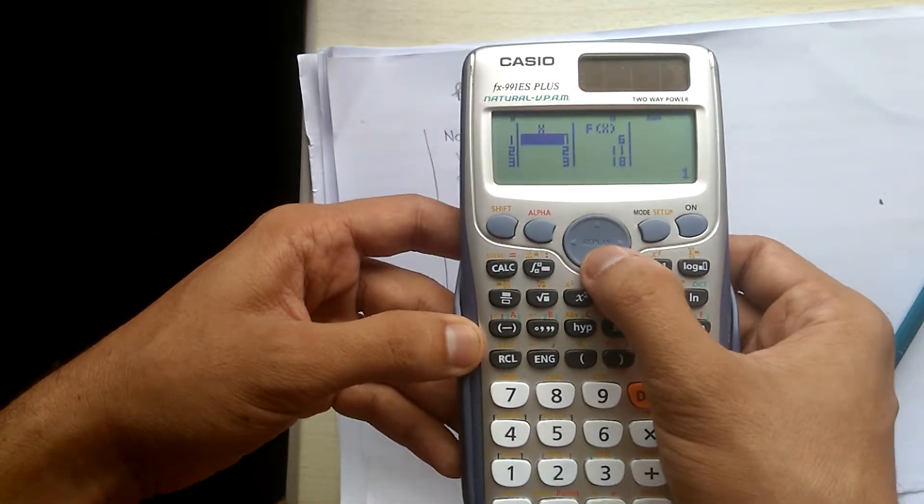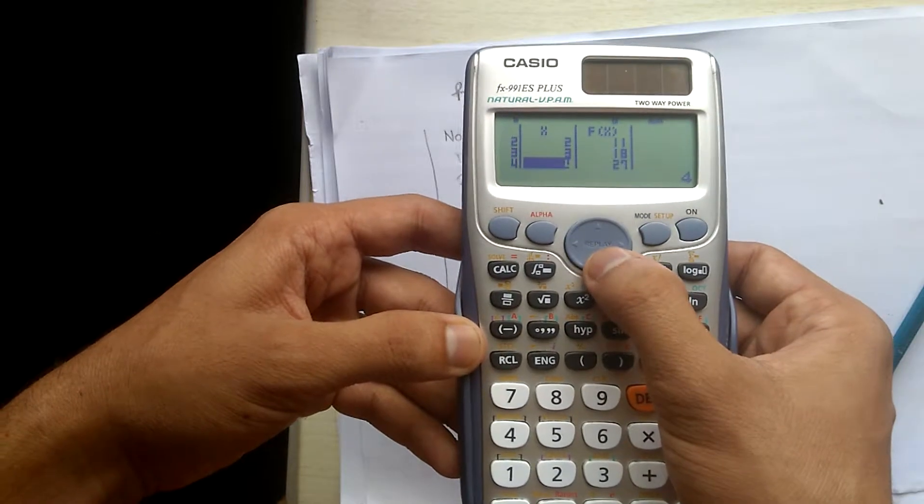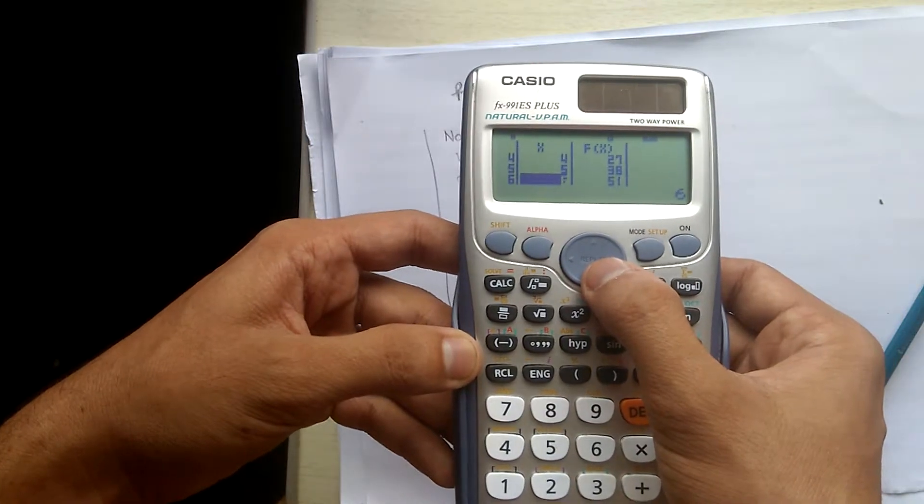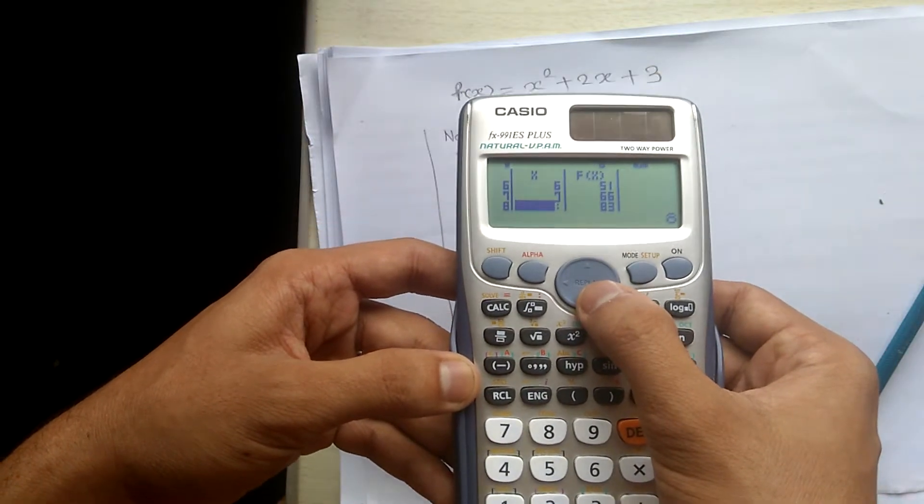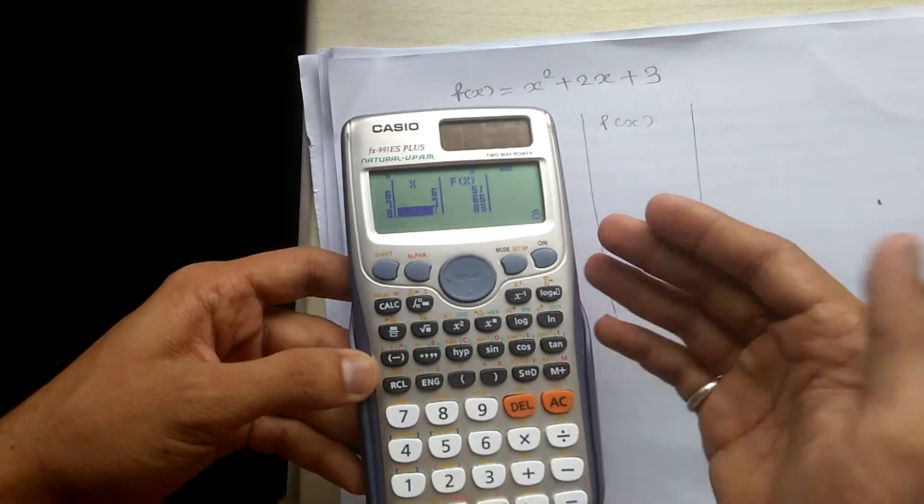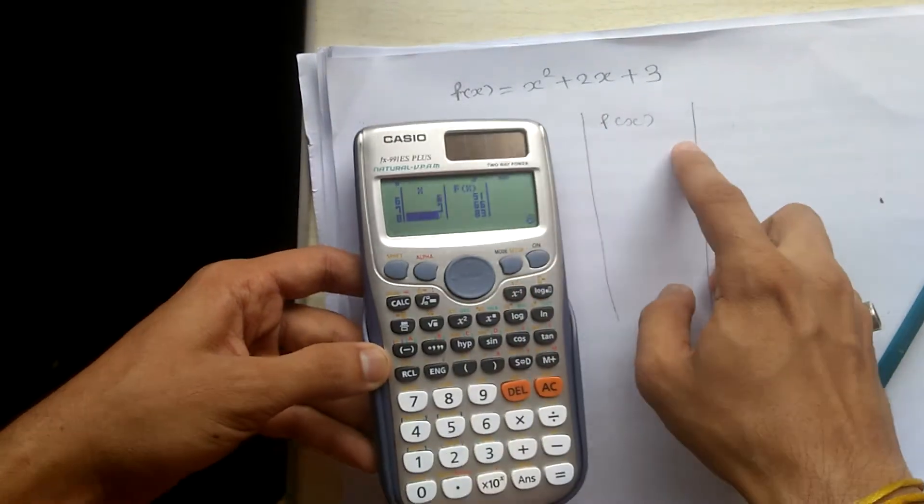We get the table as it is, with the values of x and the answer as f(x). In this way we can get the table, so I can put the values of f(x) into this table.